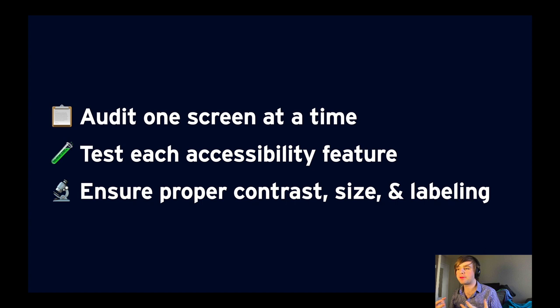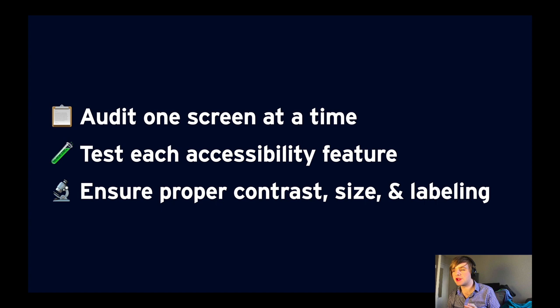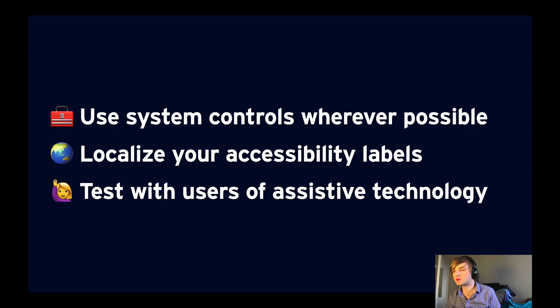To continue the audit after you've run through everything Xcode can tell you automatically, I suggest manually testing each accessibility feature on each screen in your app and filing issues for every potential area of improvement. You want to make sure each feature works, controls have proper labels, you've got appropriate contrast, and appropriate tap sizes. One thing to note: it's much easier to have an accessible app if you use system controls because they have accessibility built in. And don't forget that localizing your labels is important, especially if your app is used in multiple locales — because if the user can't understand the language your app is in, it won't really be accessible after all.